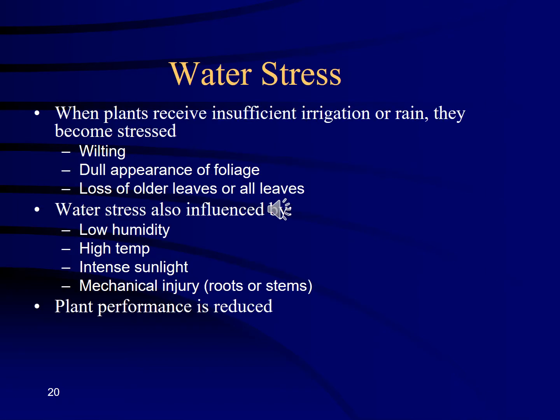How do you know if your plants are not getting the right amount of water? They'll be wilting, dull in appearance, kind of grayish, and the older leaves might look like they're about to die or falling off. Water stress can happen during high heat, very low humidity, a dry hot wind like a sundowner event, intense sunlight, or mechanical injury like a gopher eating roots or a weed eater damaging bark. All of those can cause water stress and reduce plant growth and vigor.